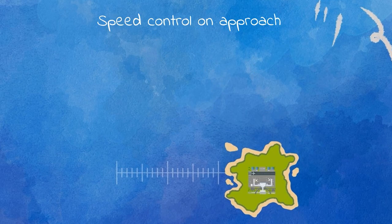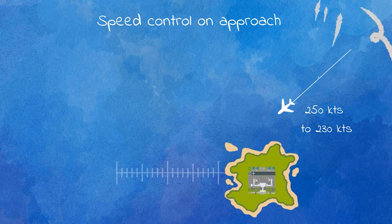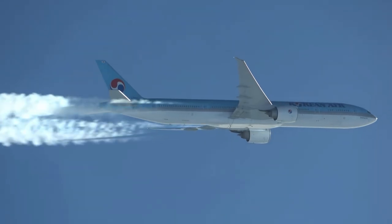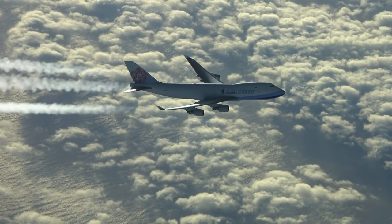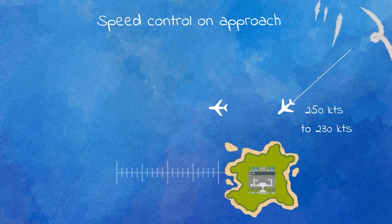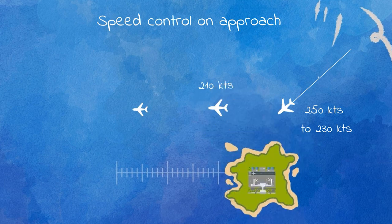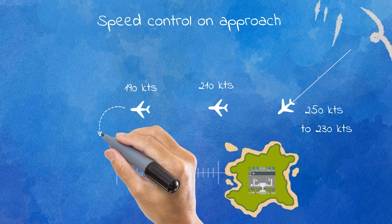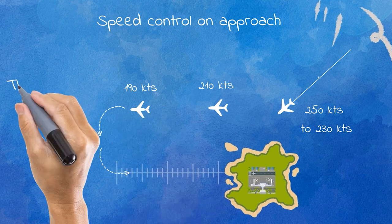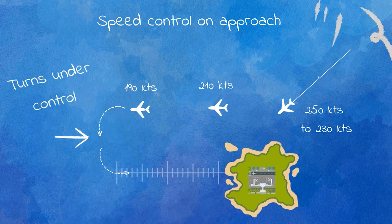Here's an example of a smooth speed reduction pattern on approach. Speeds could go from 250 knots to 230 knots on the STAR or when being vectored to the downwind — in most situations, traffic can still fly in a clean configuration at these speeds. On the downwind, the controller could start reducing speed from 230 to 210 knots, and from 210 to 190 knots before turning into the base leg, to keep the turn radius in control, avoiding overshooting the turns, and to prepare for the final inbound turn to intercept the ILS localizer.